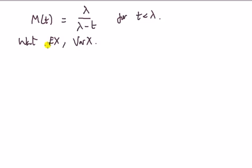First, we'll use the fact that we can get the moments by differentiating this and setting t to zero. So EX equals the first moment evaluated at t=0. Let me rewrite this without that fraction sign. Now t is equal to λ(λ-t)^(-1).